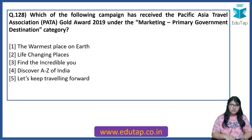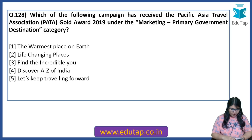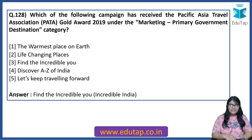Which of the following campaigns has received the Pacific Asia Travel Association Gold Award 2019 under the Marketing Primary Government Destination category? It is a very familiar name you hear a lot in advertisements. The answer is 'Find the Incredible You' — the Incredible India campaign — which has received this particular award.